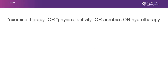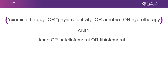Your search strategy would look like this: (exercise therapy OR physical activity OR aerobics OR hydrotherapy) AND (knee OR patellofemoral OR tibiofemoral) AND (pain OR osteoarthritis OR degeneration). The brackets tell the database to search for these words first, and then add the results to the next set of terms.